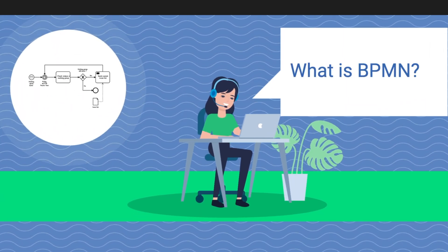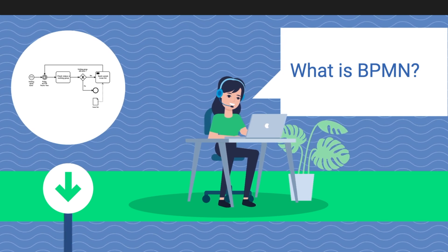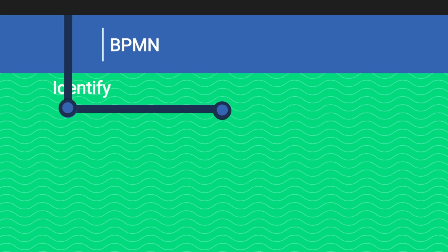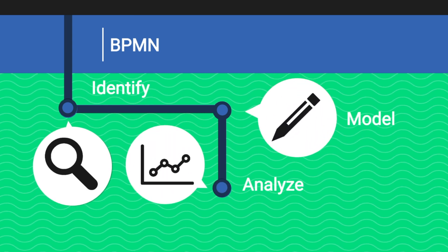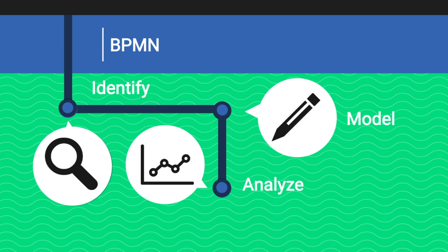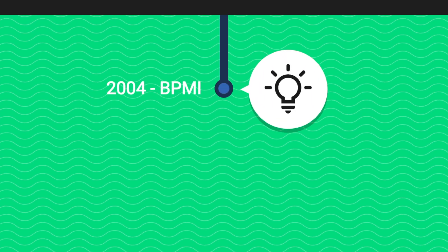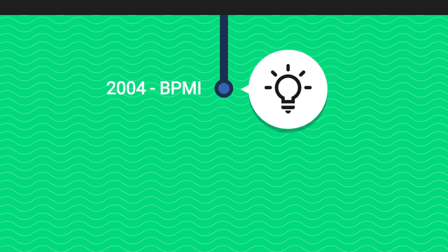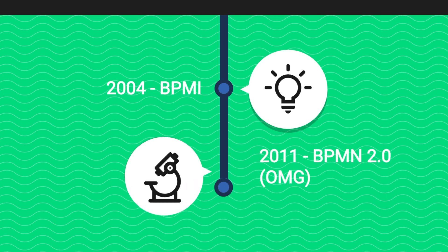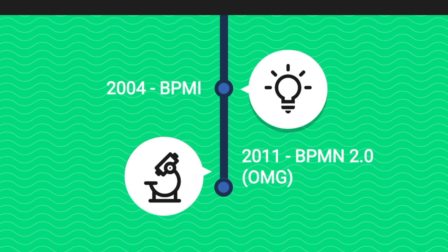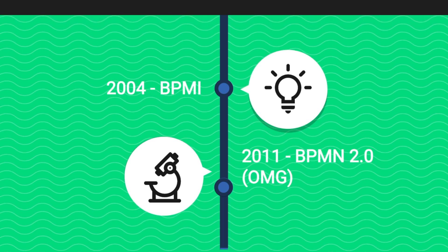In this video we are going to take a look at the business process model and notation, BPMN. BPMN can be used in order to identify, graphically model, and analyze the processes in your organization. Originally BPMN was published by the Business Process Management Initiative, BPMI, in 2004. The current version, BPMN 2.0, was introduced in 2011 by the Object Management Group.